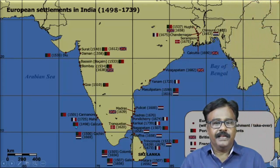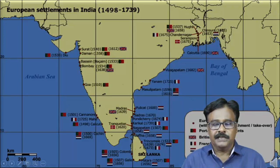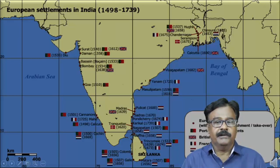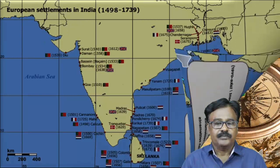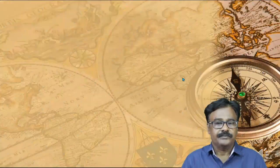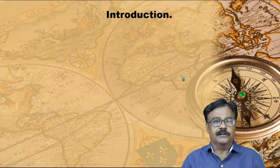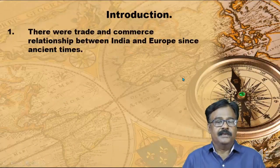On this India map you can see the colonies of European countries — Portuguese colonies, British settlements, French settlements, Dutch settlements, and Danish settlements. These are the European countries which had colonies in India.